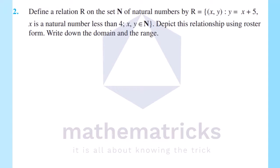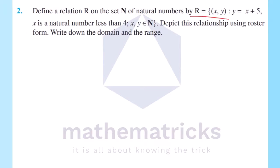Second question: define a relation R on the set N of natural numbers by R equals the set of all (x, y) such that y equals x plus 5, where x is a natural number less than 4 and (x, y) belongs to N. Depict this relationship using roster form and write down the domain and range. The relation is given in set-builder form; we convert it to roster form.